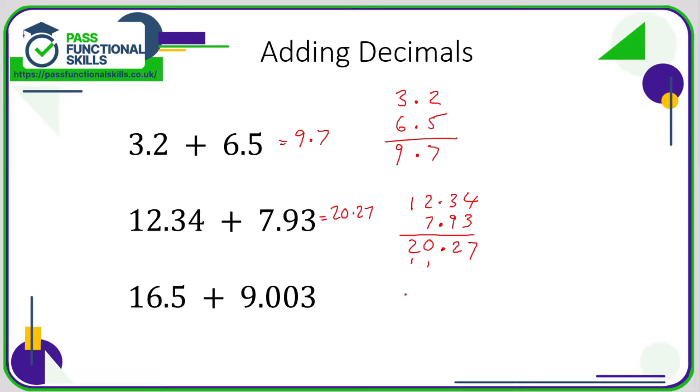And this final example: 16.5 plus 9.003. Again, it's all about how we write it down. As long as we get the decimal point in line, then everything else will be fine. So we've got a 9 to the left, so the 9 is under the 6, and a 0.03. If you prefer, you can always fill these gaps with zeros - you can write 16.5 as 16.500.